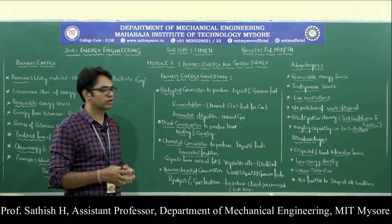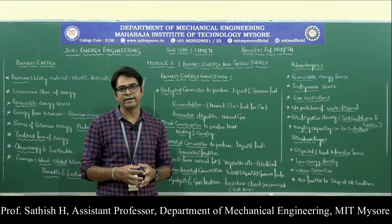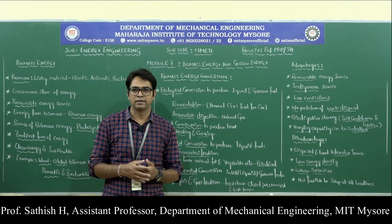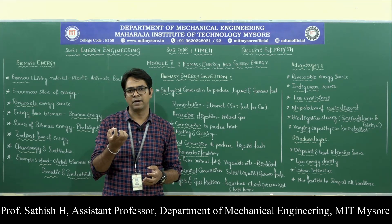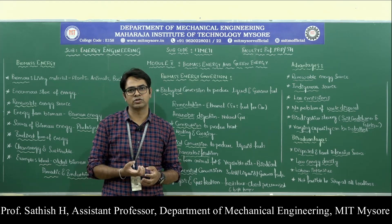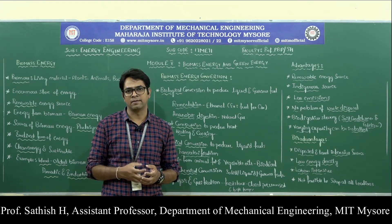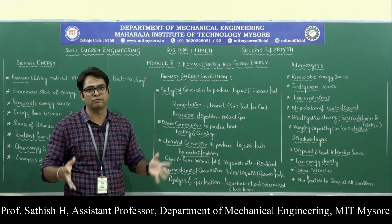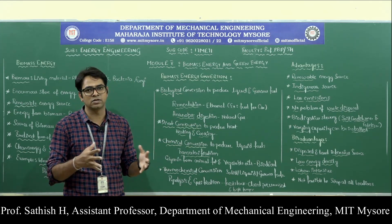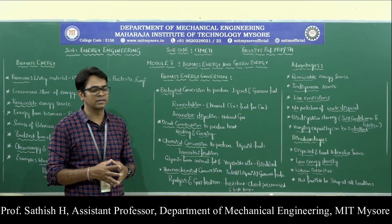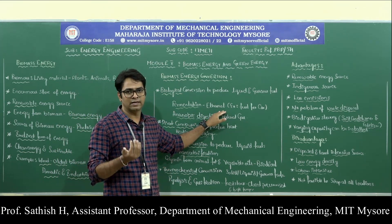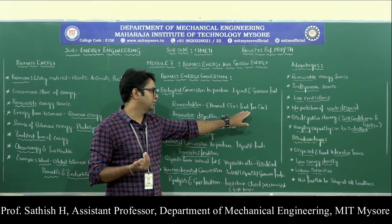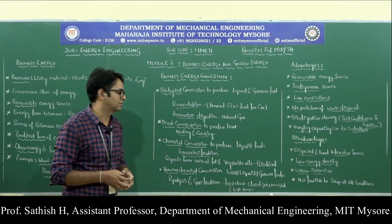For example, fermentation of sugarcane: after the juice is extracted from sugarcane, the waste is called bagasse. That can be used to produce ethanol through the process of fermentation — using enzymes and water, we ferment it and the end product is ethanol, a liquid fuel that contains energy and can be used to run automobiles.